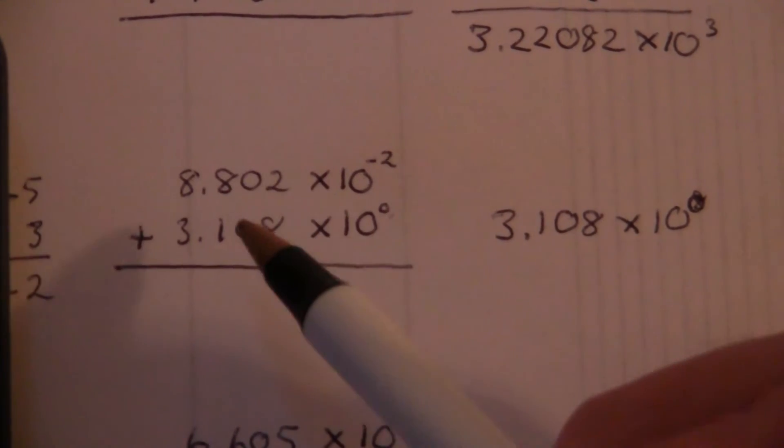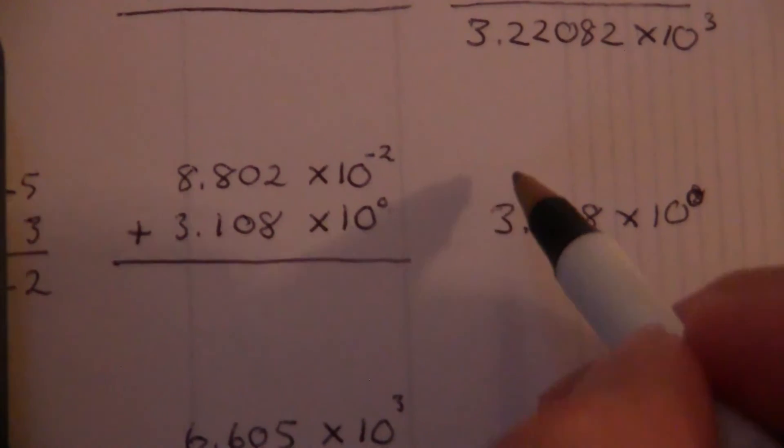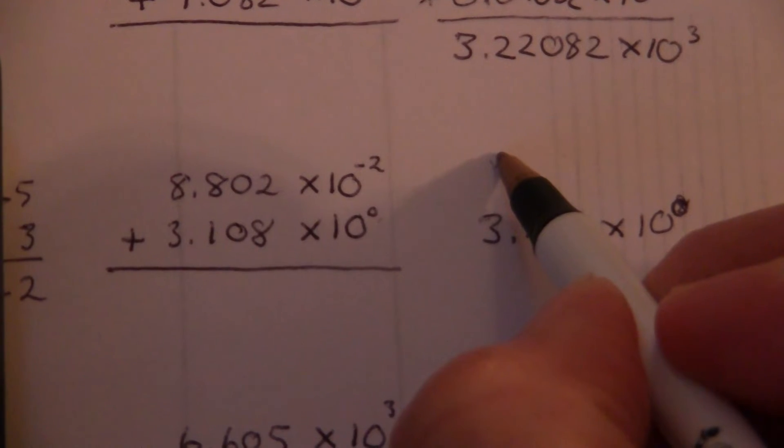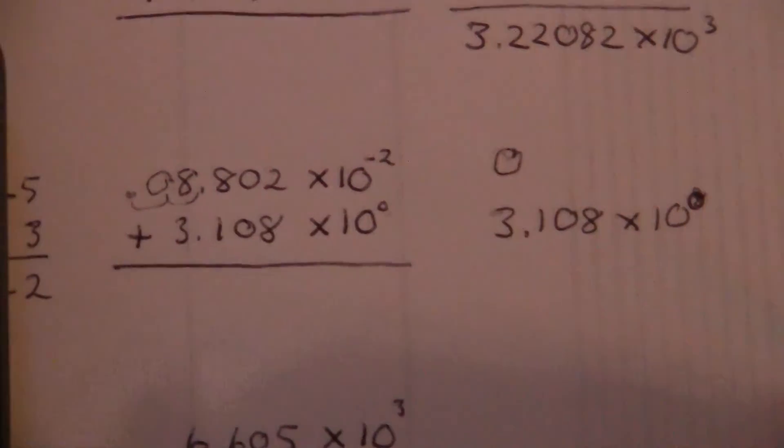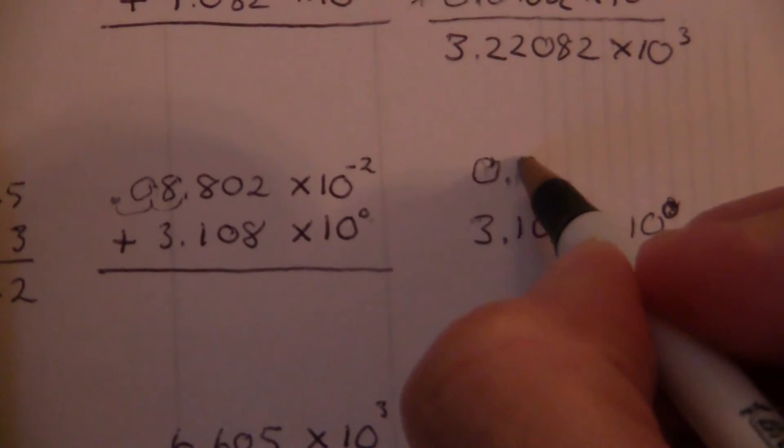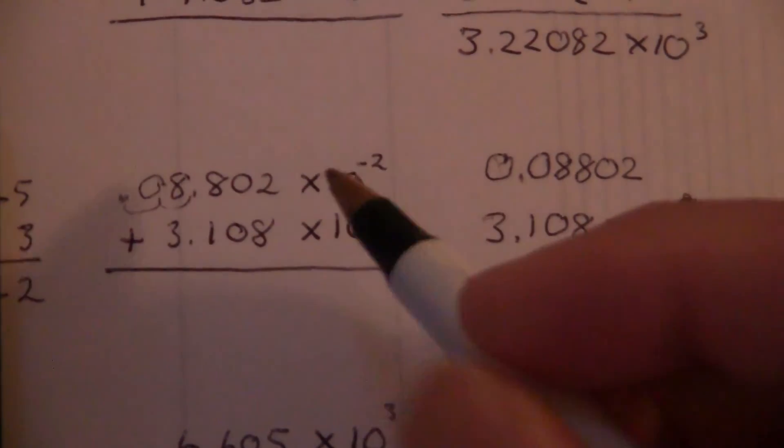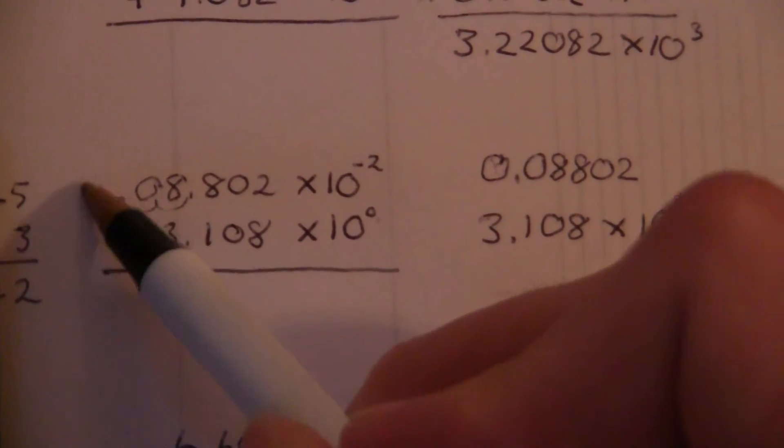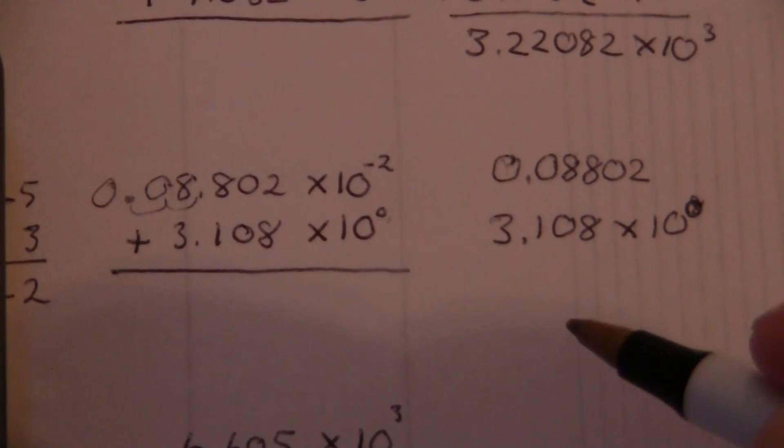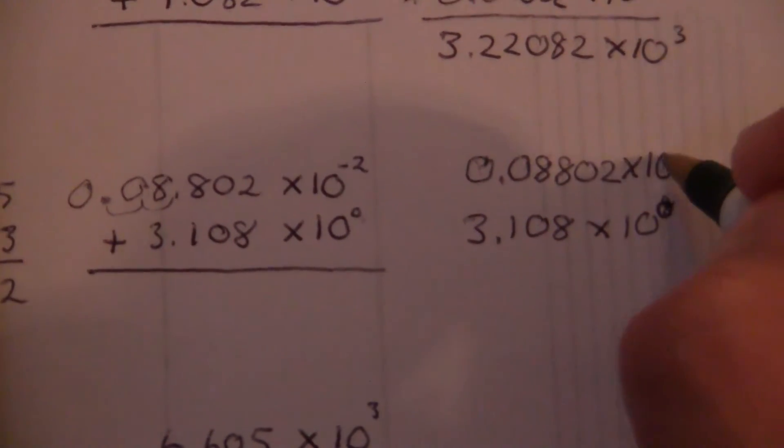And here, if we make this times 10 to the 0, that will just move that two places back. So we'll have a 0 here. If we move this back two places, it'll be 0.08802. So you just move it two places back, and you put the decimal there. And of course, most often, we write a 0 in front, although it's not entirely necessary. Times 10 to the 0.